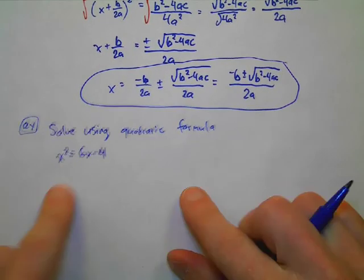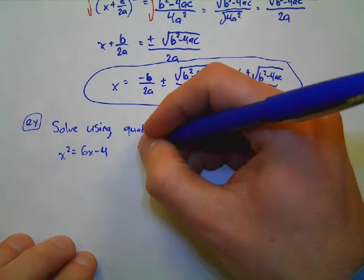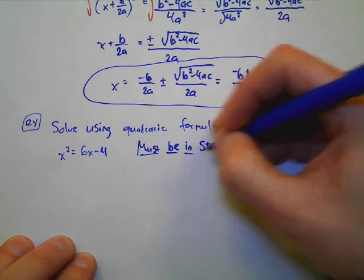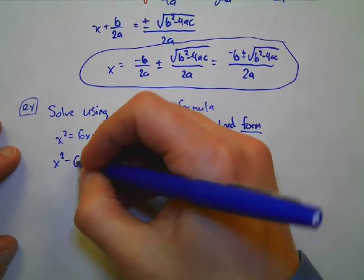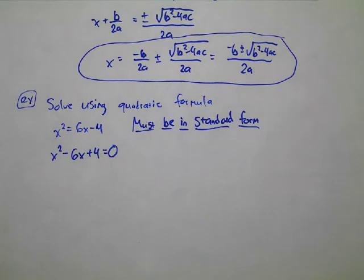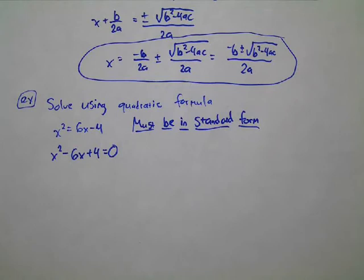The first thing you must make sure of before you use the quadratic formula is you must be in standard form — that means you'll have to move everything to one side. In future math classes you'll be given a quadratic and just asked to solve it, and you have to select which tool in your arsenal to use. Would factoring be helpful here? Could we factor and use zero product property? Are there two numbers that multiply to make four but add to make negative six? No. So factoring doesn't work here.